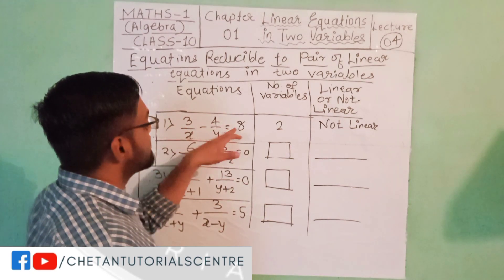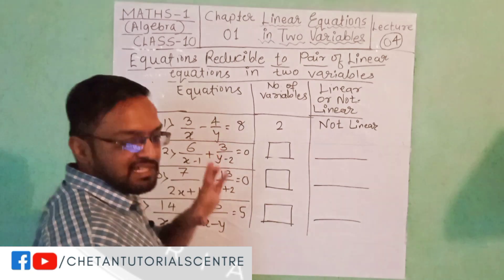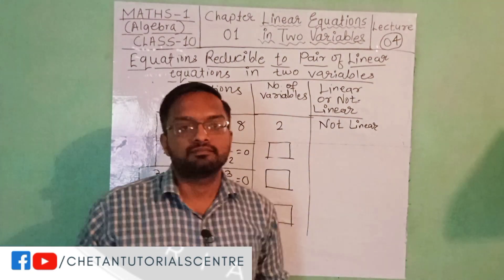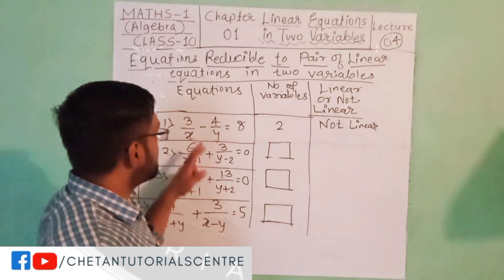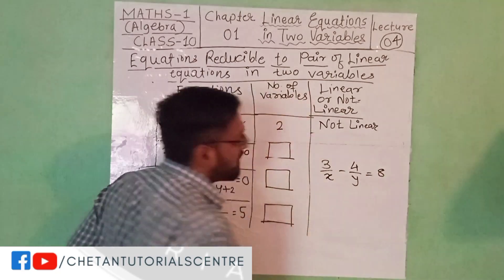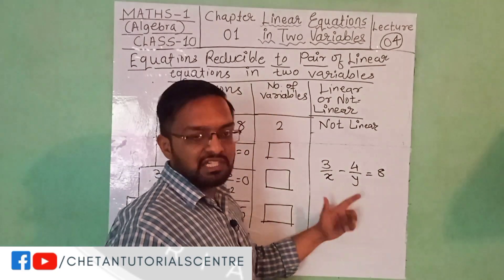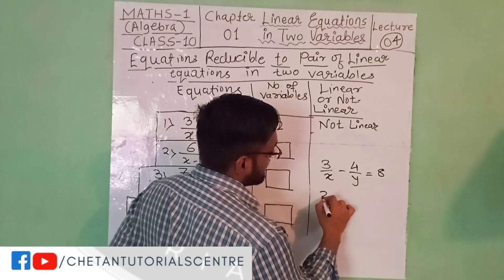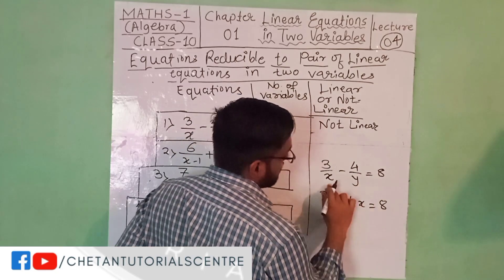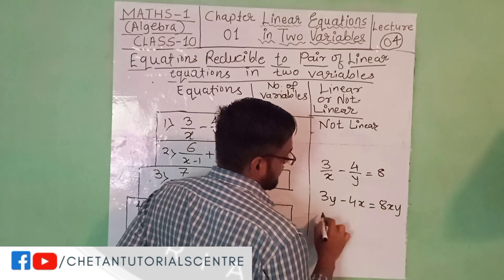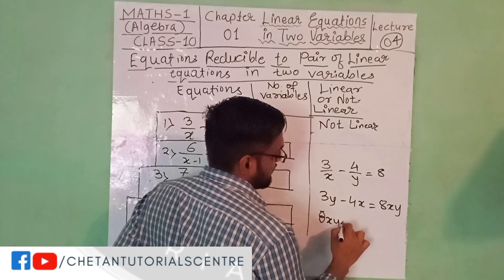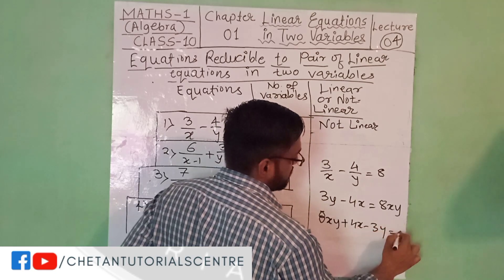Our first example is: 3 upon x minus 4 upon y is equal to 8. This is a non-linear equation. When we do cross multiplication, we get 3y minus 4x is equal to 8 into xy, which gives us xy plus 4x minus 3y is equal to 0.